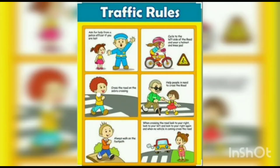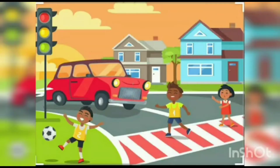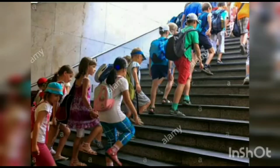Accidents happen when people drive or walk carelessly on the road and do not follow traffic rules. Sometimes children play on the roads or run across roads to cross them, which is very dangerous. You should never play on or near a road. You must always cross a road only at a zebra crossing.